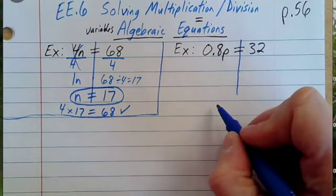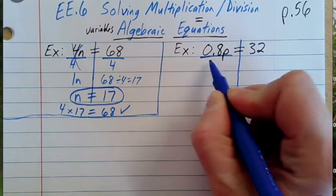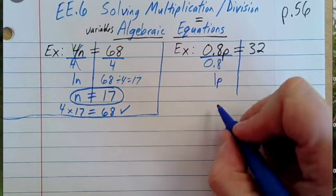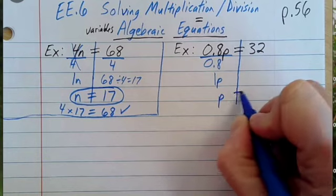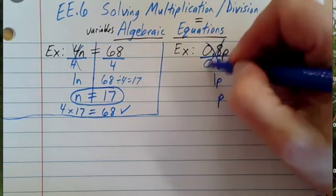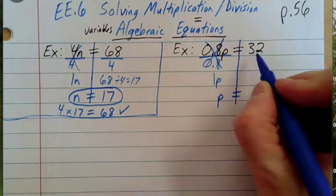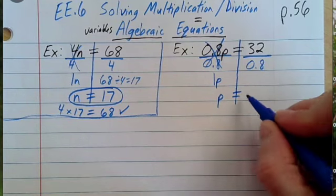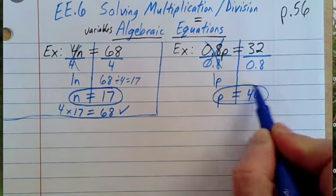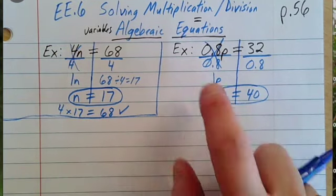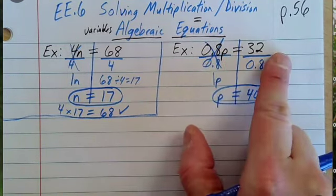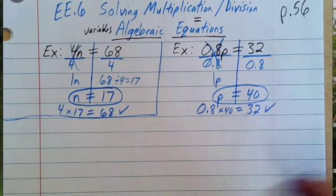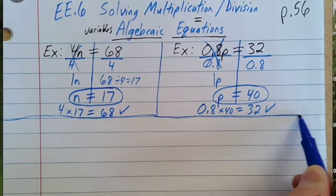In order to get p by itself, instead of multiplying by 0.8, I divide by 0.8. 0.8 divided by 0.8 gives me 1p, and 1 times p is just p — which is what we want. Whatever we do to one side we have to do to the other, so take 32 and divide by 0.8. That gives you 40 for p. Does 0.8 times 40 equal 32? Yes, it does. So p equals 40.